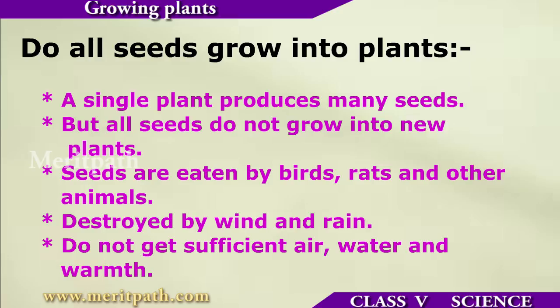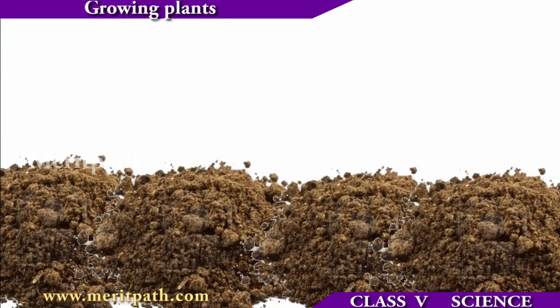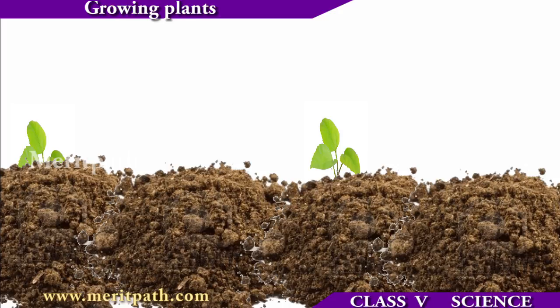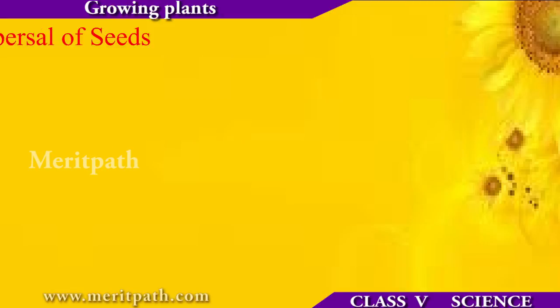All seeds do not grow into plants. There are some factors that obstruct the seed from turning into a plant. Seeds do not grow well if they land right underneath the parent plant, as there they do not get enough light, water or nutrients.